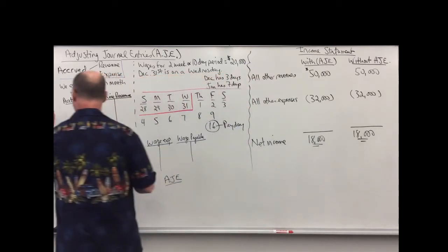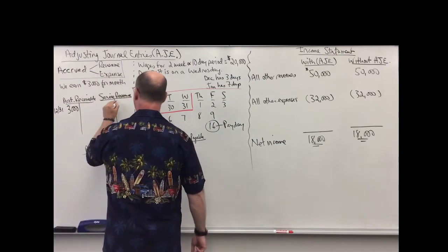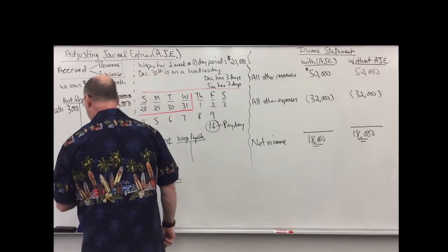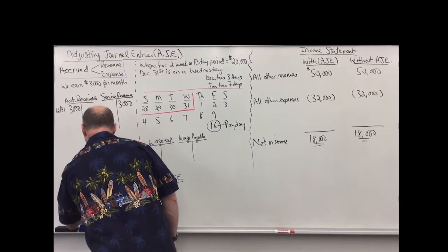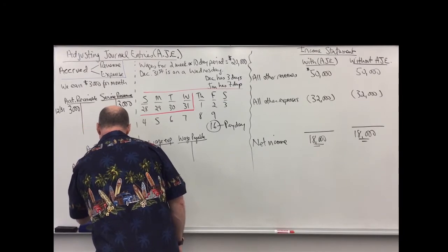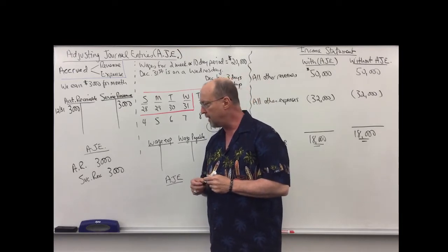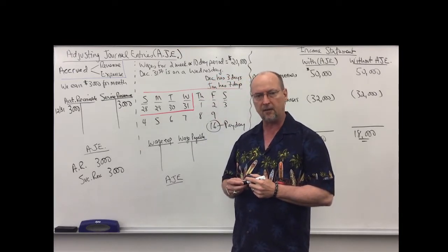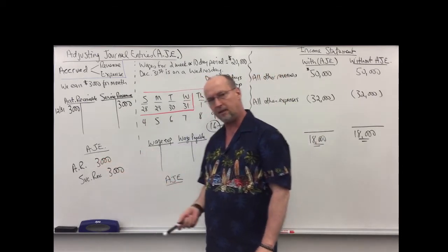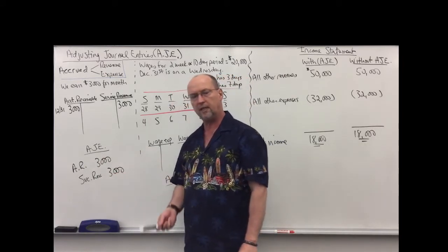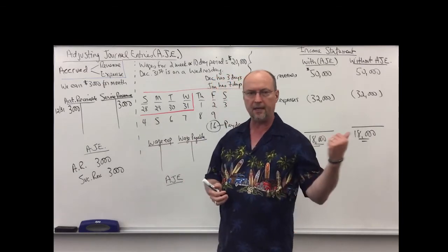On December 31st I'm going to debit accounts receivable and credit service revenue. The adjusting entry: debit accounts receivable, credit service revenue, $3,000. With all adjusting journal entries they will include one balance sheet account and one income statement account, and they never include the cash account. Accounts receivable is an asset on the balance sheet; service revenue is revenue that goes on the income statement. So we have accrued the revenue and we'll get the money in a future time period.